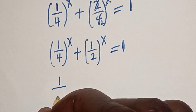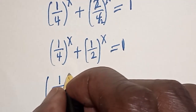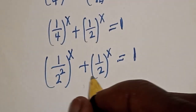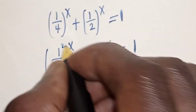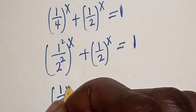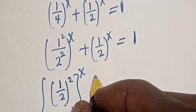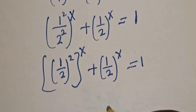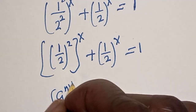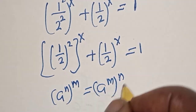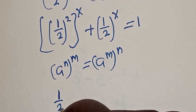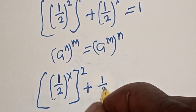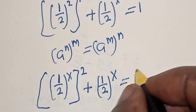Now 1 over 4 is 1 over 2 squared, so we have (1 over 2 squared) raised to the power s plus (1 over 2) raised to the power s is equal to 1. Using the rule that a raised to the power n raised to the power m equals a raised to the power n times m, this becomes (1 over 2) raised to the power 2s plus (1 over 2) raised to the power s is equal to 1.